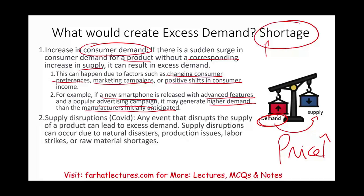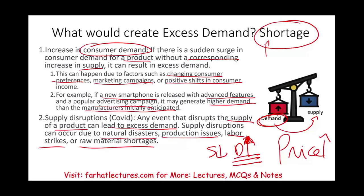Another example is supply disruption — and here we're talking about COVID. An event that disrupts the supply of a product can lead to excess demand. We cannot ship anything from China or from producer countries anymore — we have a shortage, a supply problem. Especially during COVID, supply went down and demand for many products went up because people wanted to hoard as much as possible. Supply disruptions can occur due to natural disasters, production issues, labor strikes, raw material shortages, or an event like COVID.